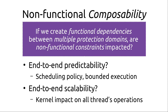I'm going to be focusing on non-functional goals in general and looking at the composability of the system with respect to these goals. The idea is that if we create functional dependencies between multiple protection domains, are the non-functional constraints impacted? If we're looking at end-to-end predictability as one of the main things we're providing, what impacts that? And if we add synchronous IPC between different protection domains within the system, are we maintaining those predictability properties? This involves things like the scheduling policy and ensuring bounded execution of all client tasks.